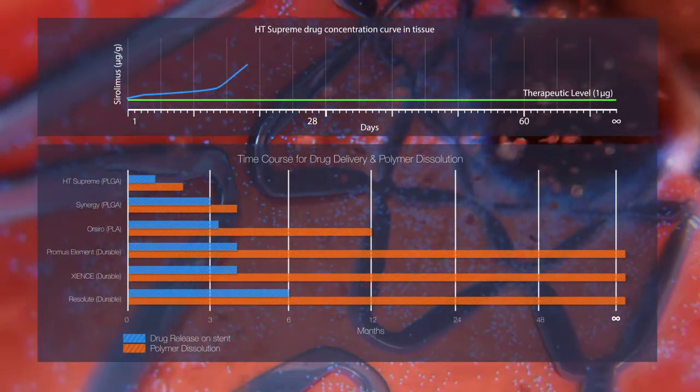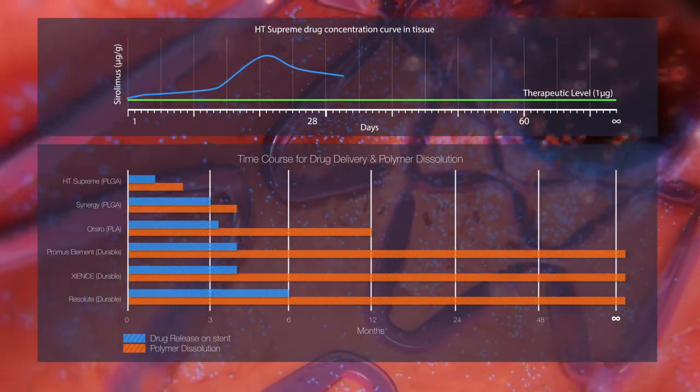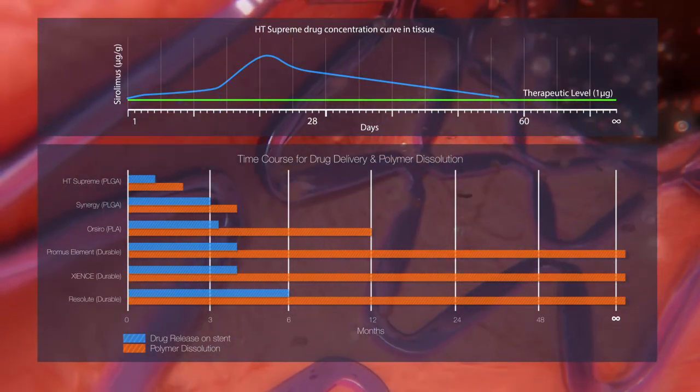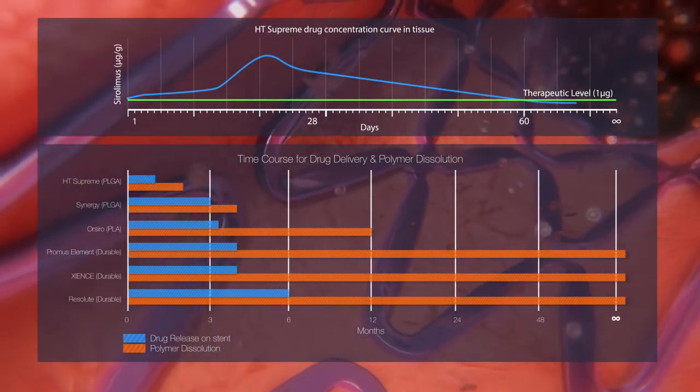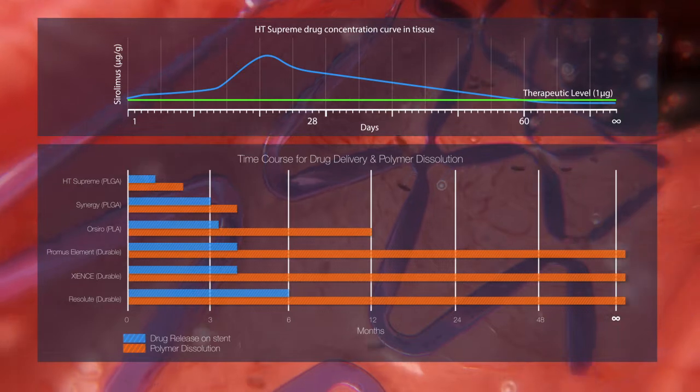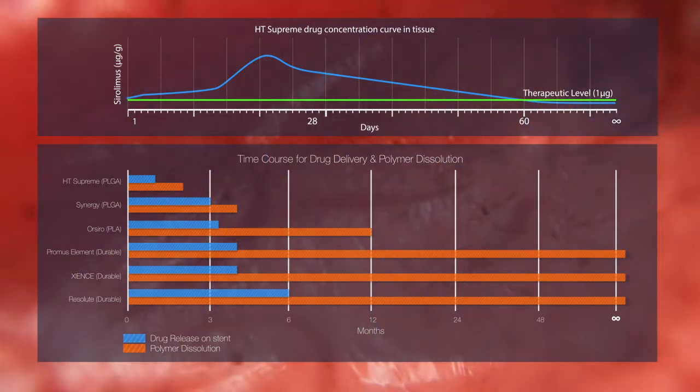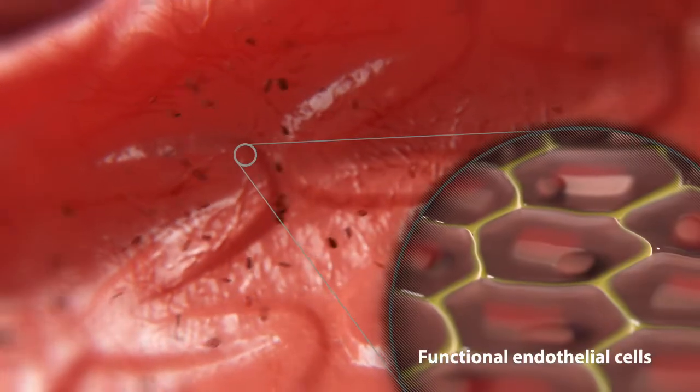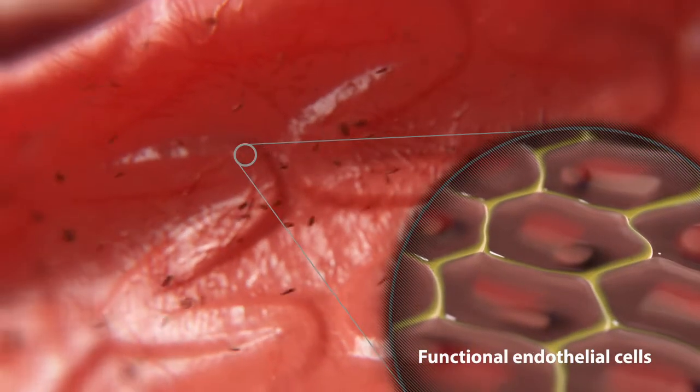The PLGA is completely dissolved after 60 days, at which point the sirolimus concentration falls below therapeutic levels. At this stage, the EG layer also may encourage early functional endothelium compared to existing stents, resulting in a smooth and thin endothelial coverage.